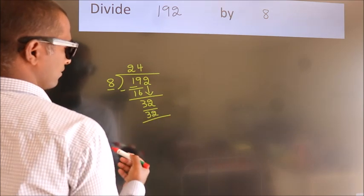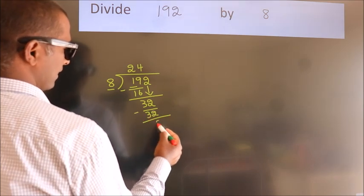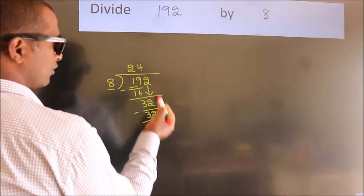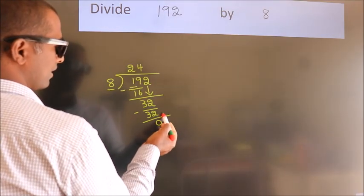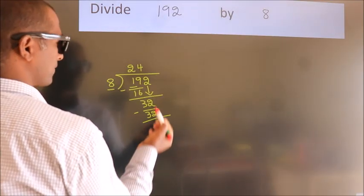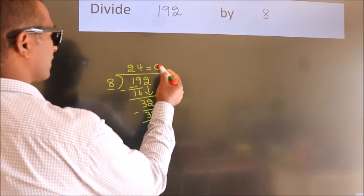Now we subtract. We get 0. After this, no more numbers to bring down and we got remainder 0. So this is our quotient.